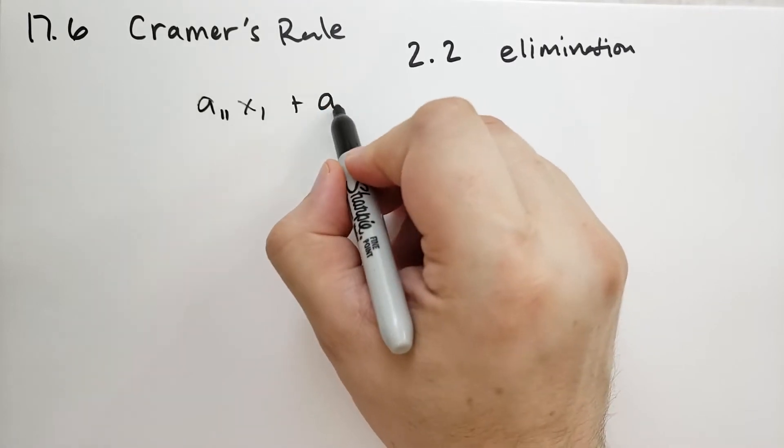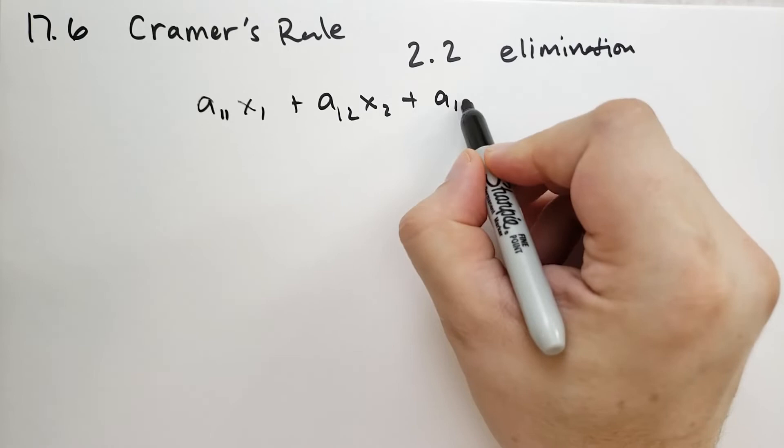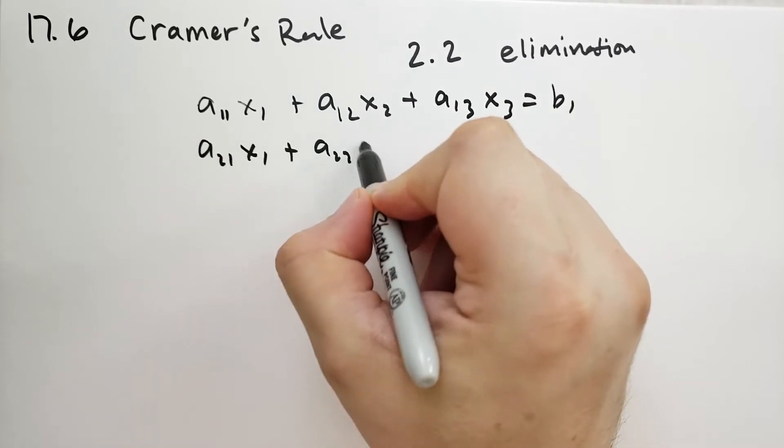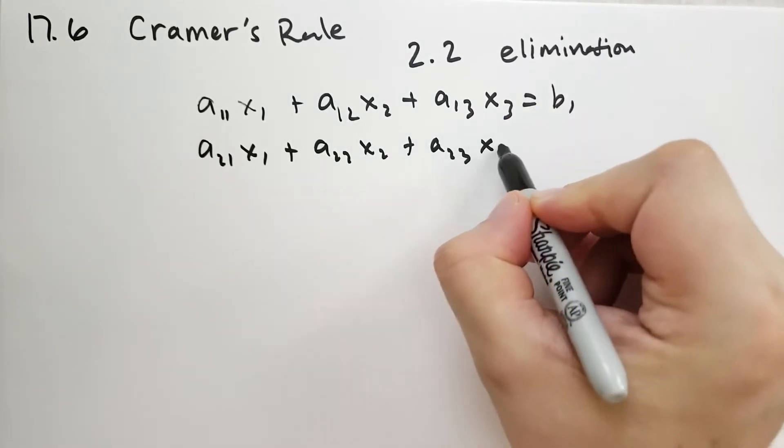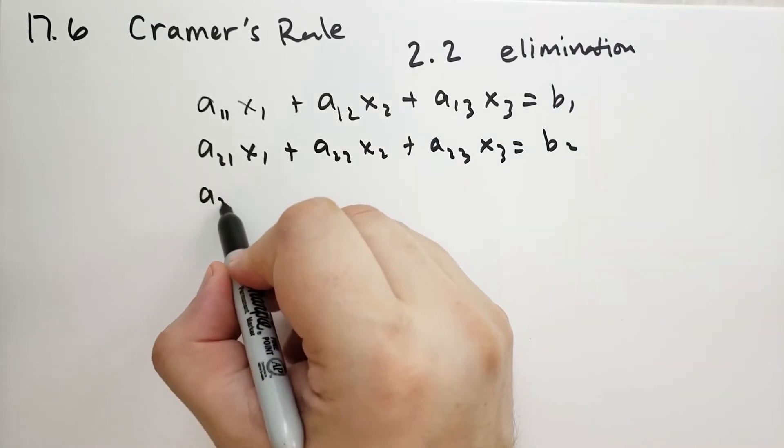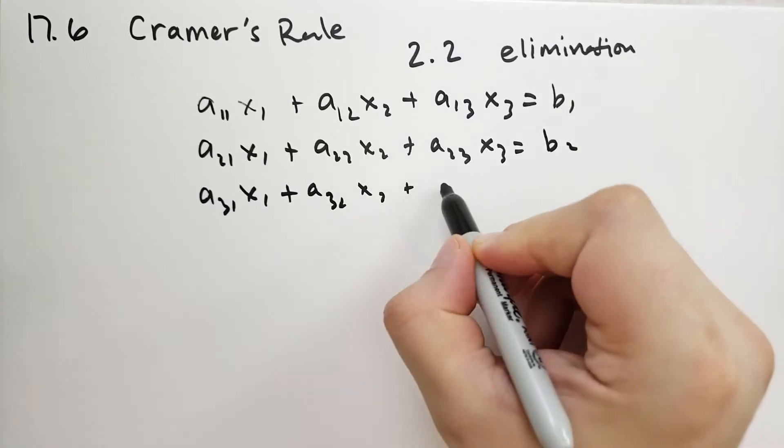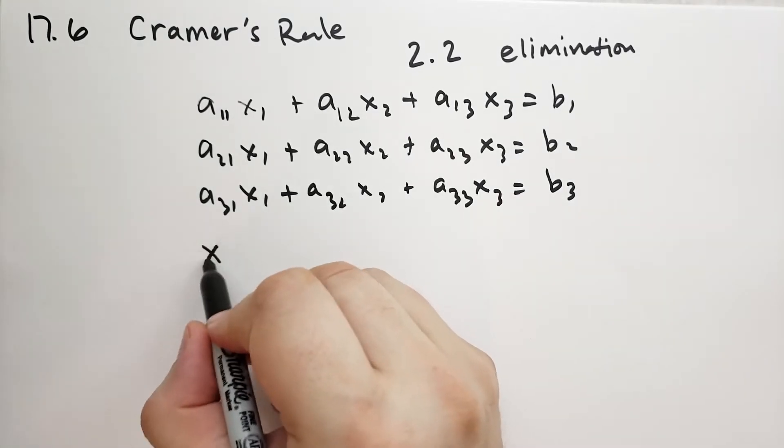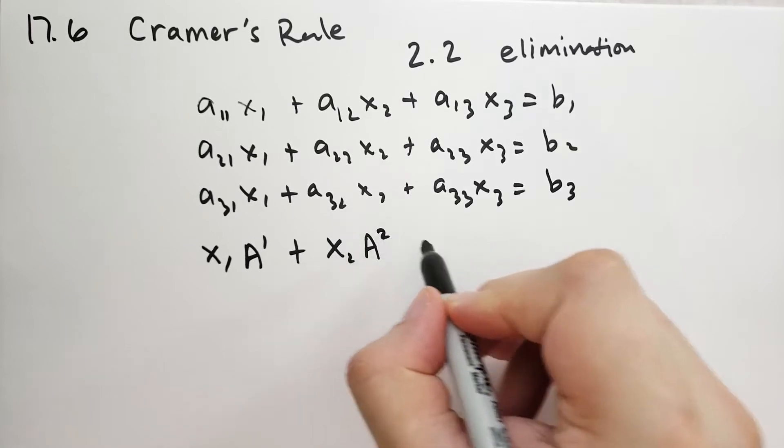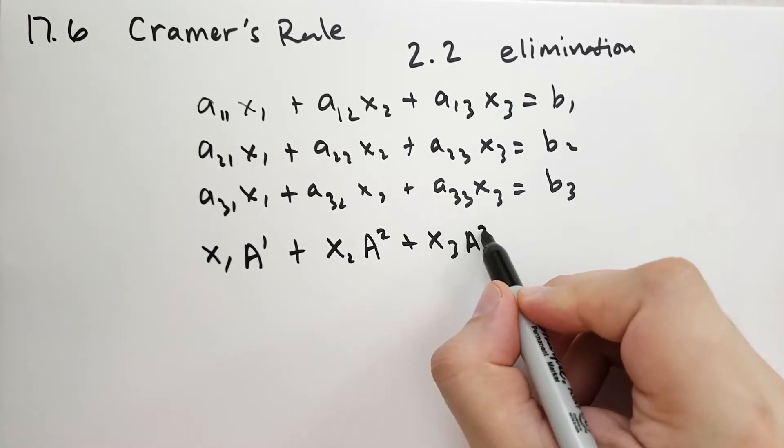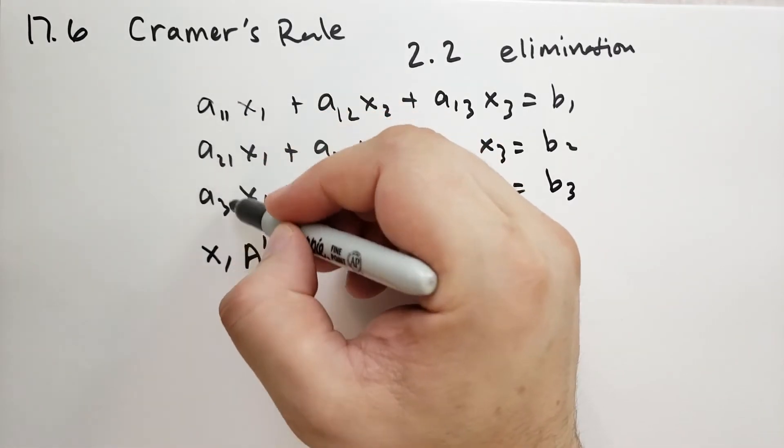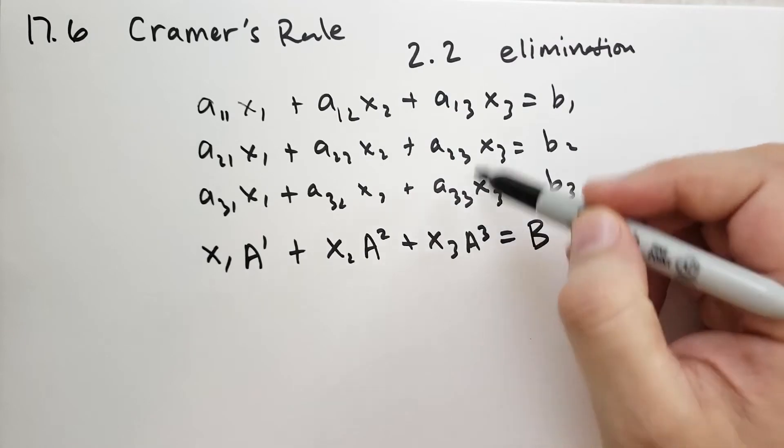Let's write this out: A11x1 plus A12x2 plus A13x3 equals B1, A21x1 plus A22x2 plus A23x3 equals B2, A31x1 plus A32x2 plus A33x3 equals B3. We can rewrite this as X1 times A1 plus X2 times A2 plus X3 times A3 equals B in vector notation. These are the column matrices: A1 is (A11, A21, A31), A2 is (A12, A22, A32), and A3 is (A13, A23, A33).